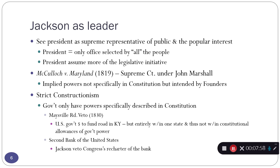These implied powers mean that Congress and/or the president can fudge a little what they want to do and still claim that it falls within what's called the necessary and proper clause. That's a place in the Constitution that lists what Congress can do, and then says Congress can do the things that are necessary and proper in order to do their job.